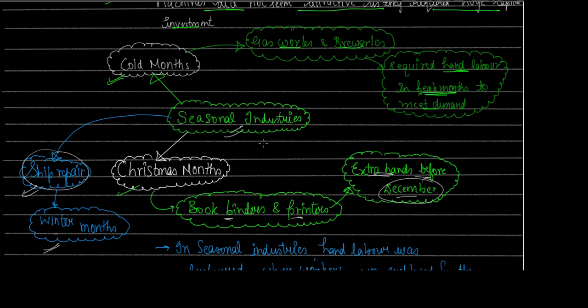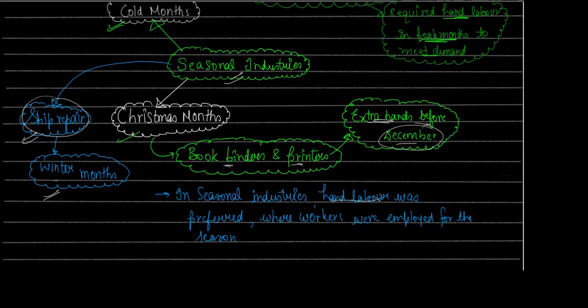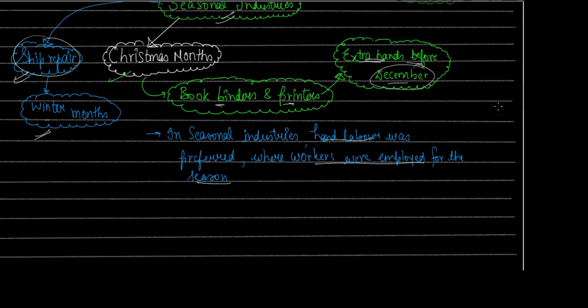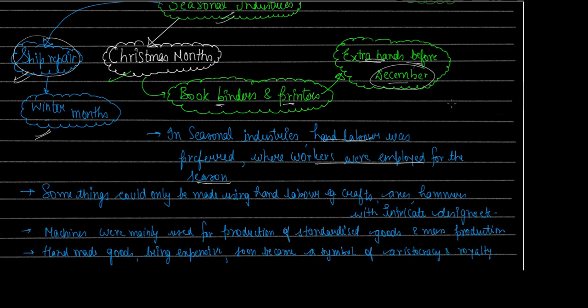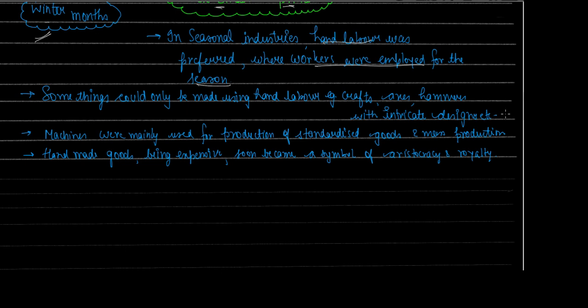So that was the discussion of seasonal industries — industries where labor demand was seasonal. In seasonal industries, hand labor was preferred and workers were employed only for a season. The industrialist's thought process was: since we only need labor at the seasonal level, why waste money buying expensive machines and maintaining them? It's better to take labor as and when required during peak seasons. Now, were machines used at all? Very largely, they were not.